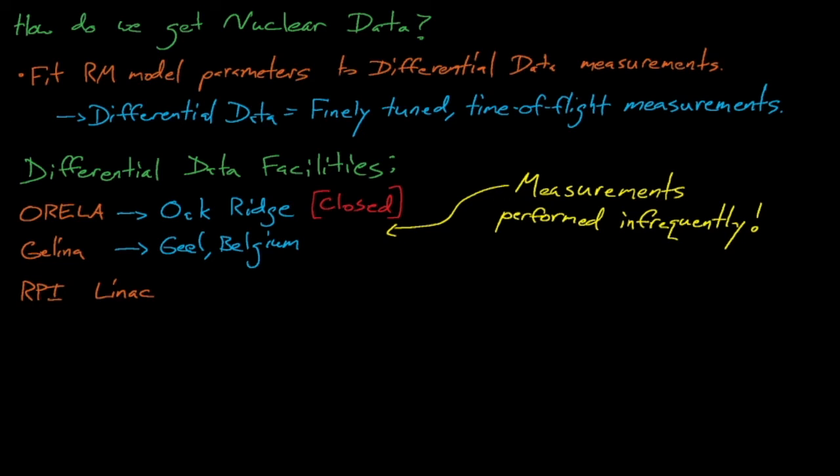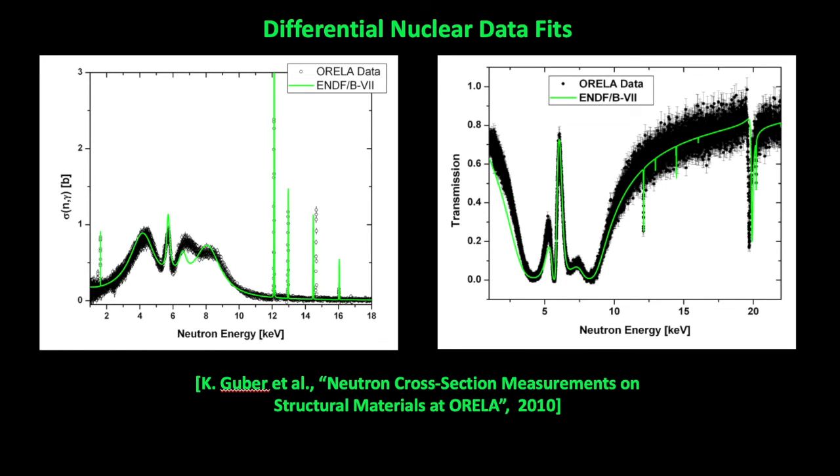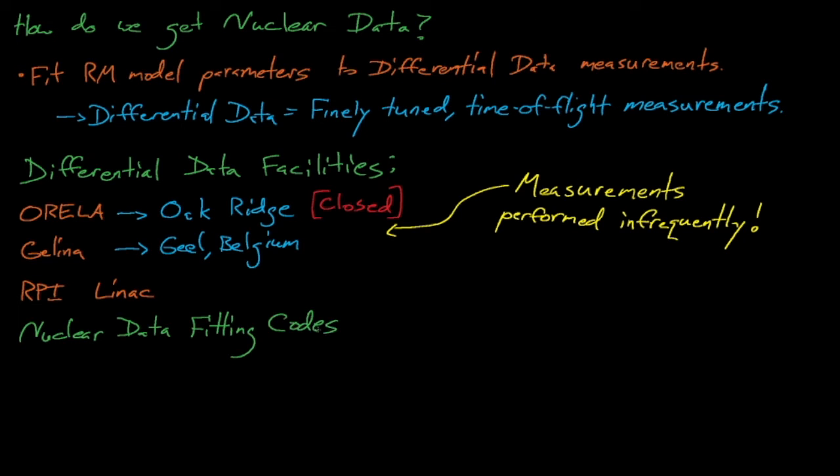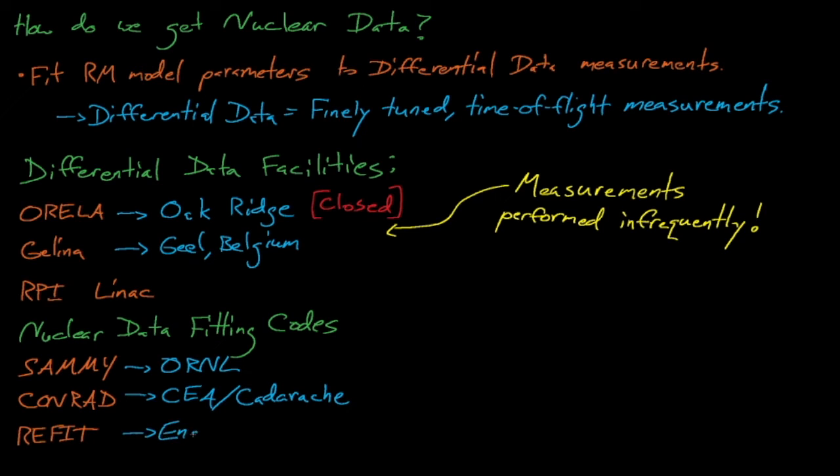Differential data measurements are, as you can see here, usually fairly noisy, and evaluating this nuclear data involves using Bayesian statistical methods to optimally fit model parameters to this noisy data. The SAMMY code from Oak Ridge is used in the majority, about 80 percent, of these nuclear data evaluations, while the CONRAD code from CEA and the REFIT code from England and Geel are used to a lesser extent.